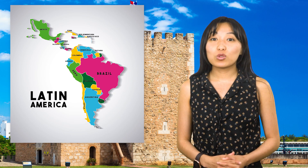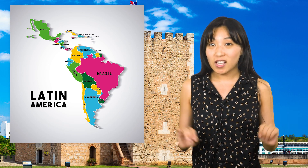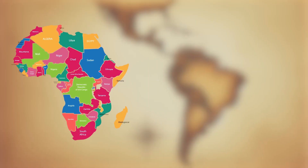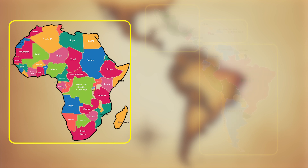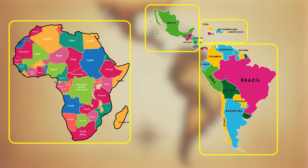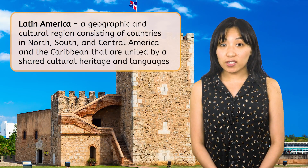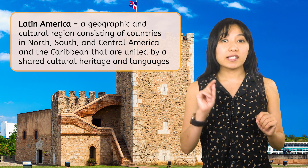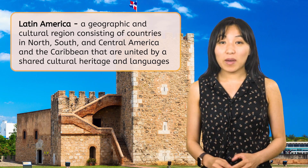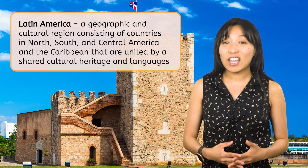Latin America is home to 20 countries and hundreds of different cultures. Last week, we discussed Africa, which is also home to many diverse cultures and countries. However, African nations are grouped together because they're in one continent. But Latin America isn't. So why are these countries grouped together? The answer involves history and language. Latin America is a geographic and cultural region consisting of countries in North, South and Central America and the Caribbean that are united by a shared cultural heritage and languages.